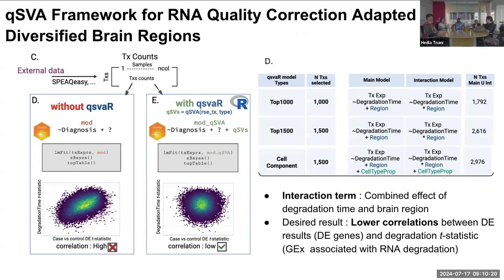A little about the project I was involved in: post-mortem brain tissues are a valuable resource to study neuropsychiatric diseases. Nevertheless, there is a bias introduced by RNA degradation due to post-mortem interval — the time elapsed from the death of the person and the collection of tissue for analysis. This introduces a bias in our differential expression studies, and the goal of the QSVAR project is to correct for this bias.